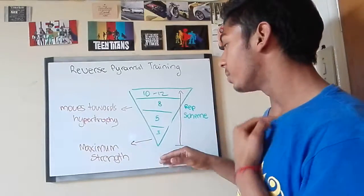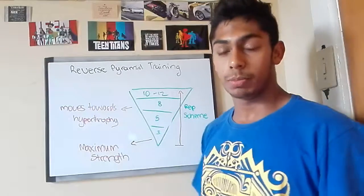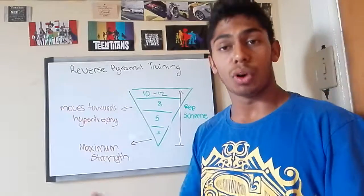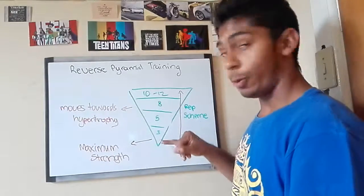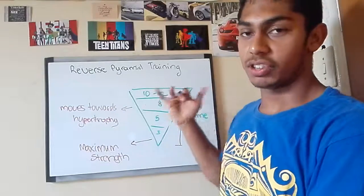One thing to keep in mind is that these numbers can change according to how you structure your pyramid training and your goals. If your goal is to be something more like a powerlifter you may start with one rep, three reps, five reps and maybe eight or six reps here.